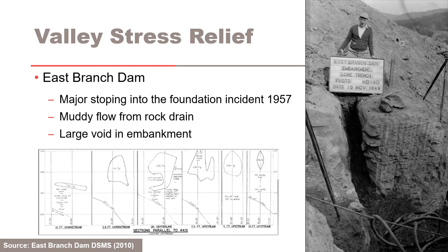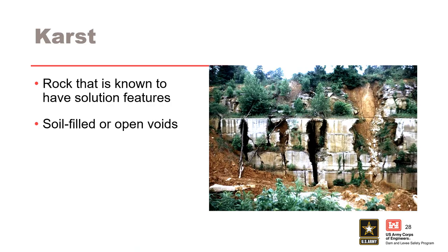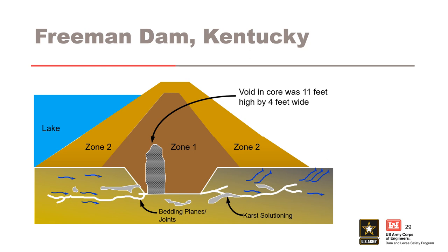Another mechanism for rock defects is karst, where defects are created by solutioning in the rock — this is an example from a rock quarry in Indiana. Freeman Dam in Kentucky is another example. It is located in Elizabethtown in central Kentucky. Although the dam did not breach, the case clearly shows progression of the potential failure mode. The dam was a 50-foot-tall clay embankment with a cutoff trench and toe drains, built in the 1960s. Significant seepage issues were not reported until March 1997 following a record pool. Increased drain flows, seeps, boils, and saturated areas were observed downstream of the dam.